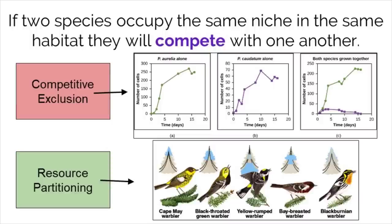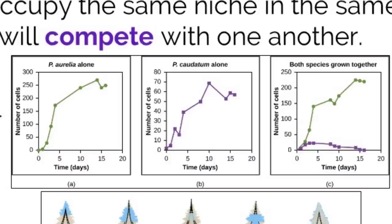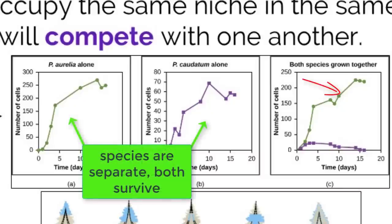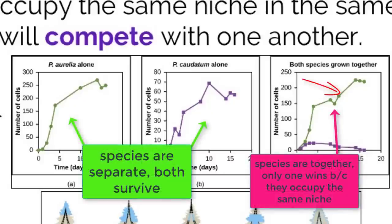While every species plays a specific role in the environment, sometimes two species can end up having a similar niche. If two species occupy the same niche in the same habitat, they will end up out-competing one another until one is excluded or the role changes. This first set of graphs describes competitive exclusion, which is a phenomenon characterized by one species using the resources more efficiently than the other. This will eventually drive the other species into extinction, as seen in the third graph.